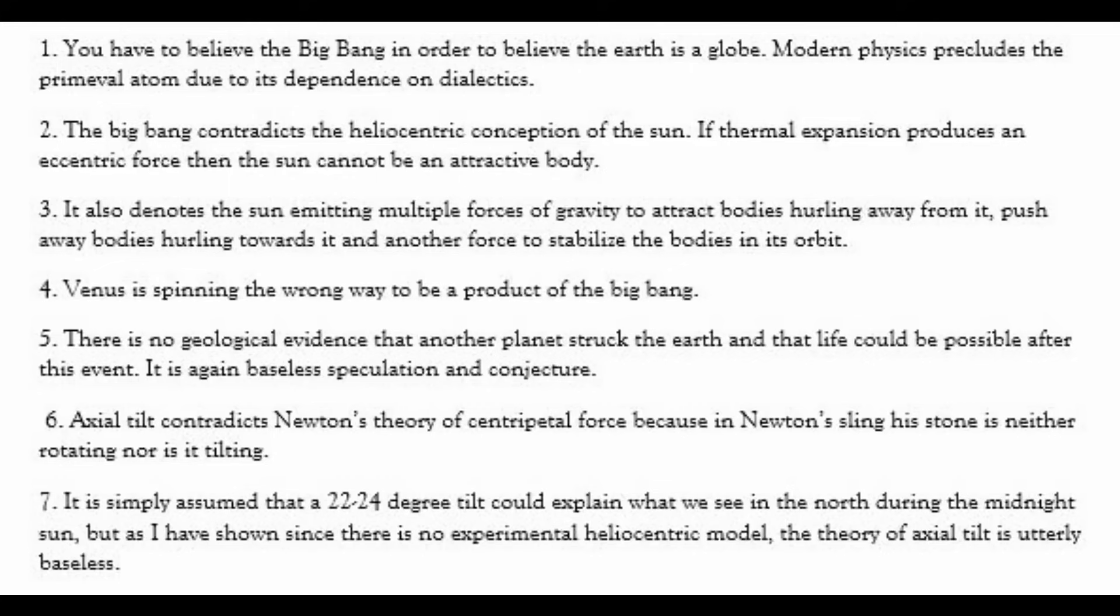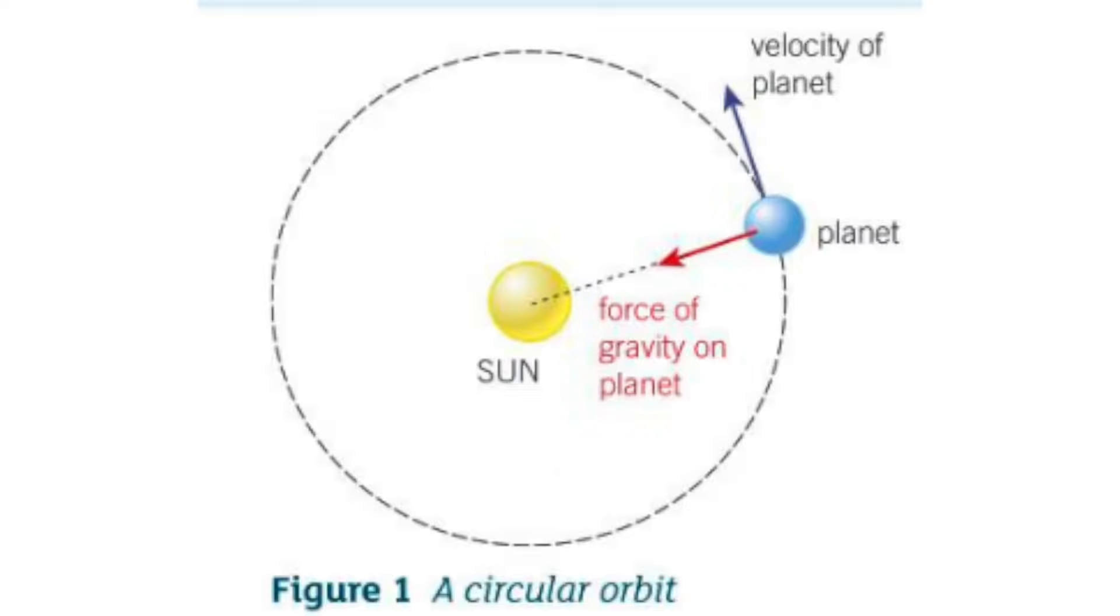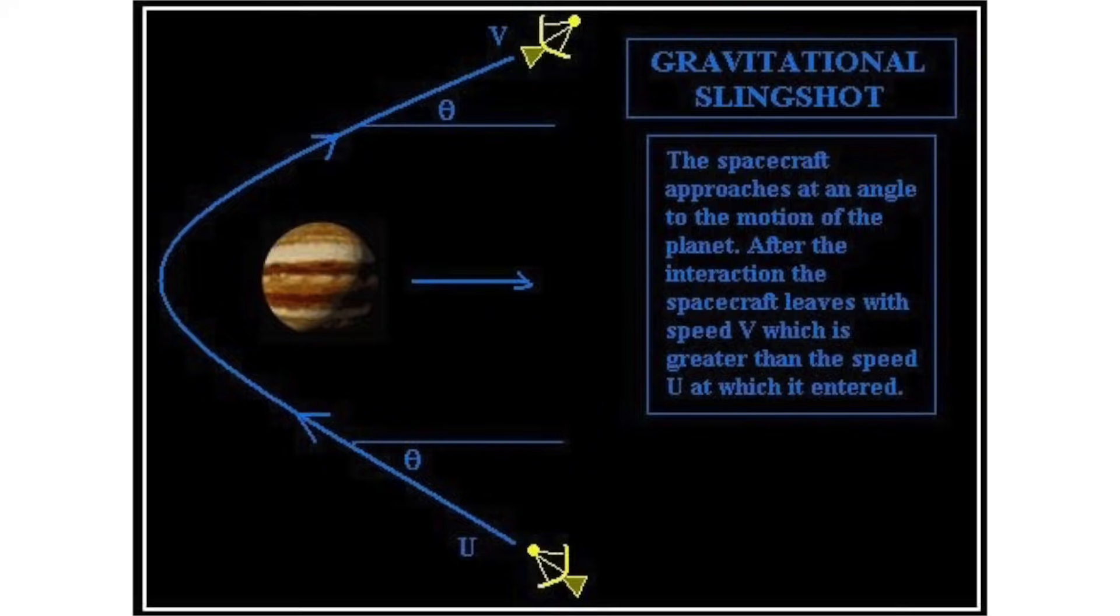Number three, it also denotes the sun emitting multiple forces of gravity. One to attract bodies hurling away from it, another to push bodies away hurling towards it, and then another to stabilize everything after all the forces have been applied. No, gravity always behaves the same, and there aren't variations of gravity. However, gravity isn't always the only force in play. If an object is affected by the sun's gravity and no other forces are present, then the object will simply be pulled towards the sun. If, however, an object has a tangent velocity, then that along with gravity combined together will give an orbit around the sun. As for pushing bodies away from the sun, gravity doesn't do that, but rather what you're probably referring to are objects that are moving away from the sun fast enough to escape its gravitational pull. See, this is why we don't have people like you, who don't even have the most basic understanding of physics, work at NASA. Goddamn.